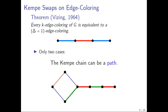This is how Vizing's proof works: take a color class and reduce the number of edges colored with that color until none remain, thereby deleting a color class and reducing the total number of colors used. Vizing's theorem says that starting from a k-edge coloring, you can reach a delta-plus-one edge coloring.